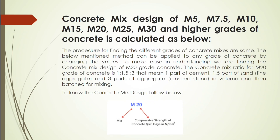Concrete mix design of M5, M7.5, M10, M15, M20, M25, M30, and higher grades are calculated as follows. The procedure for finding different grade of concrete mixes is the same, and the method can be applied to any grade by changing the values. To make it easy to understand, we are finding the concrete mix design for M20 grade. The concrete mix ratio for M20 grade is 1:1.5:3 — that means one part cement, 1.5 parts sand, and three parts aggregate by volume.